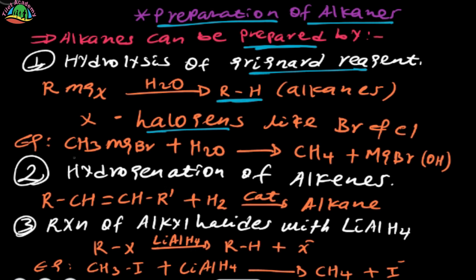For example, magnesium bromide is prepared by hydrolysis. It involves the metal group — hydrogen is produced from the metal group of magnesium bromide and magnesium bromide hydroxide.